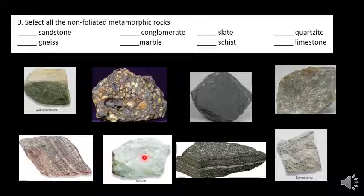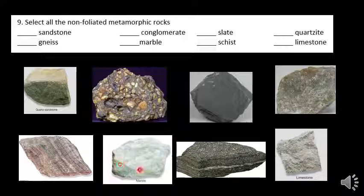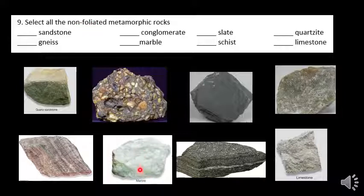Metamorphic marble — marble is made from limestone. Limestone is sedimentary, so we're not going to check that one. But when limestone turns into the metamorphic rock called marble, there are no foliation lines in it. Like the big marble statues, you don't see lines running through them. So we are going to check marble — it does not have the lines in it, making it a non-foliated metamorphic rock.